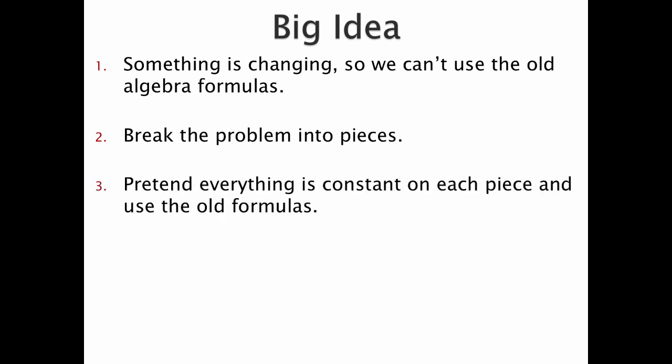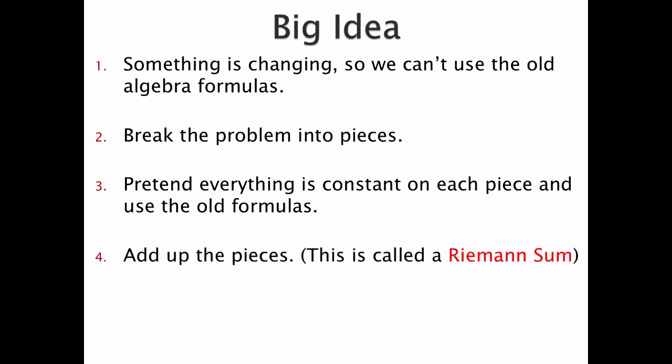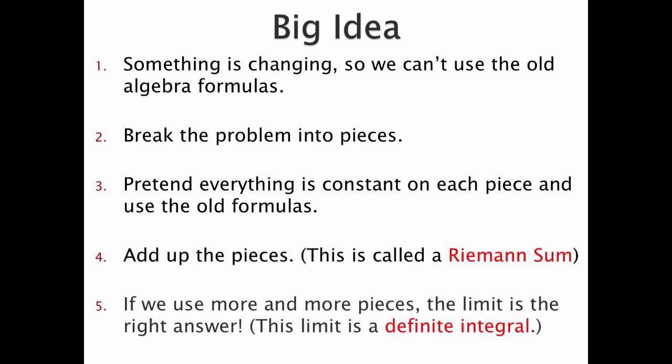We could pretend that R is constant on each of the little pieces and use the formula for finding that kind of area. We add up the pieces — that gives us a Riemann sum — and if we use more and more pieces as they get smaller and smaller, the limit becomes a definite integral. That's the definition of what a definite integral really is. So now we have the problem set up correctly and the answer becomes an integral.